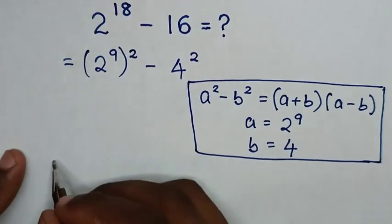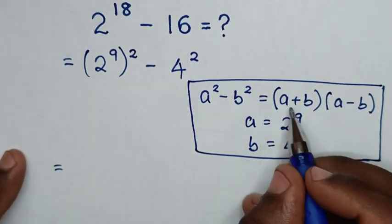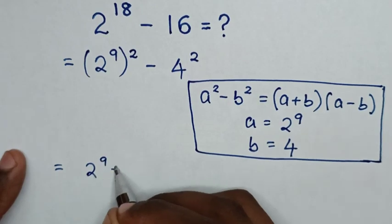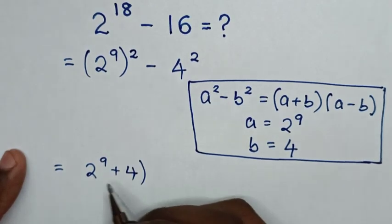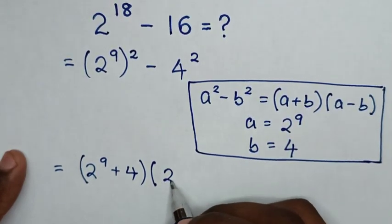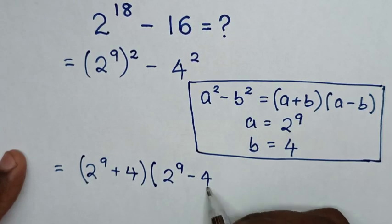Then in the next step, it equals a plus b, which is 2^9 plus 4, times a minus b, which is 2^9 minus 4.